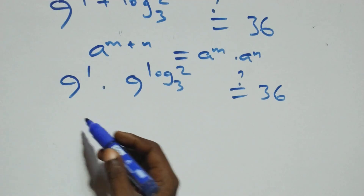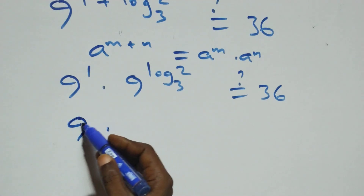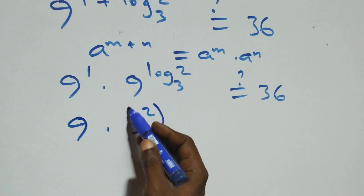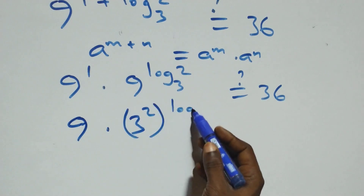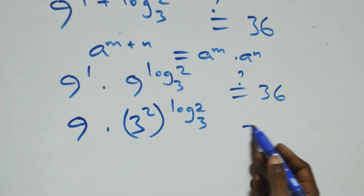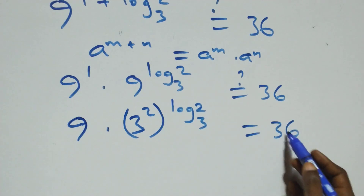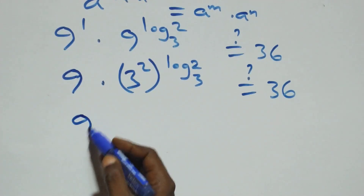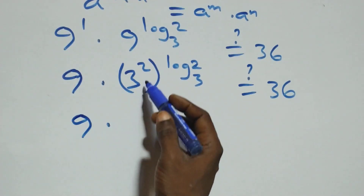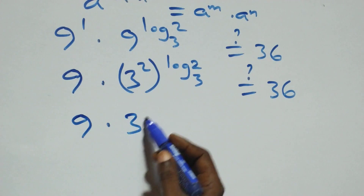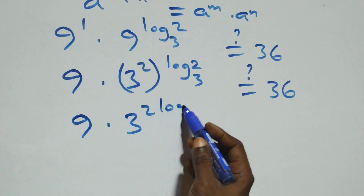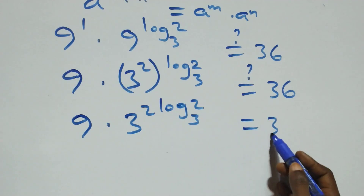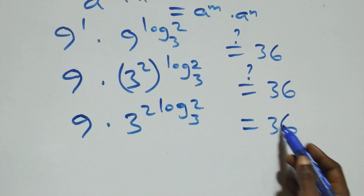Now 9^1 equals 9. We express 9 as 3 squared, so 9^(log₃2) becomes (3²)^(log₃2), which equals 3^(2·log₃2), and we check whether 9 times 3^(2·log₃2) equals 36.